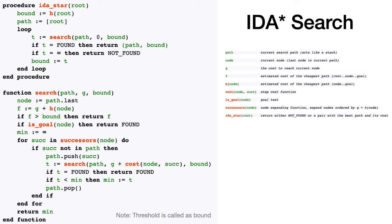The threshold is referred to as 'bound' in the code. We continuously check if the goal node is reached; if so, it is marked found. If not, we pursue deeper as long as F(n) values are within the bound. If F(n) exceeds the bound, we backtrack to other nodes.